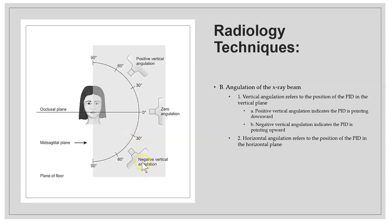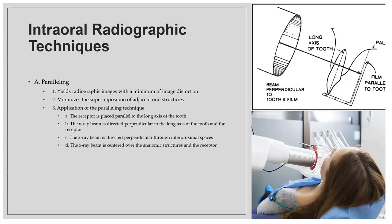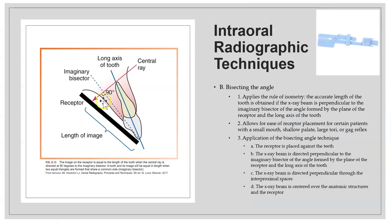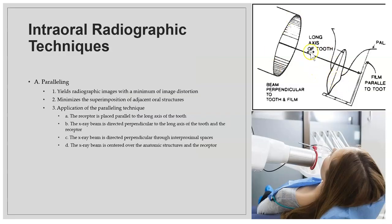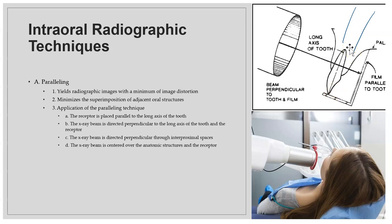Negative vertical angulation is aiming the PID from below; positive vertical angulation is aiming from above. In terms of technique, paralleling means aiming the PID directly at the tooth so the film and the long axis of the tooth are parallel to each other, with the beam perpendicular. Paralleling produces very little image distortion — no foreshortening or elongation.